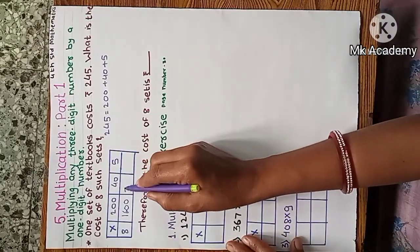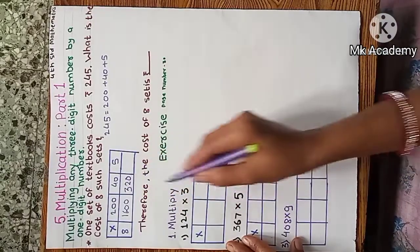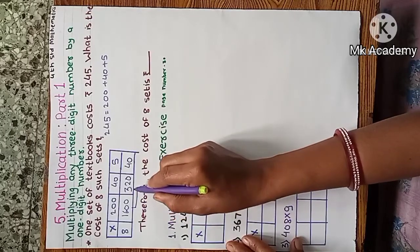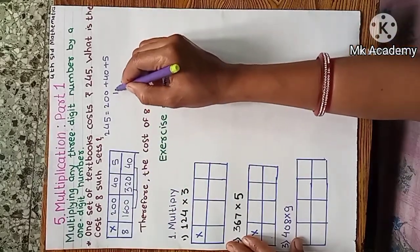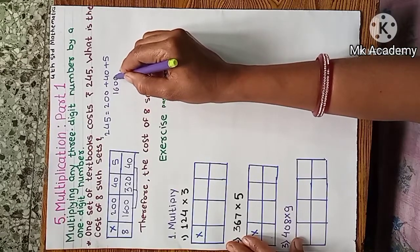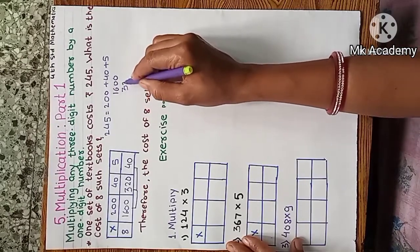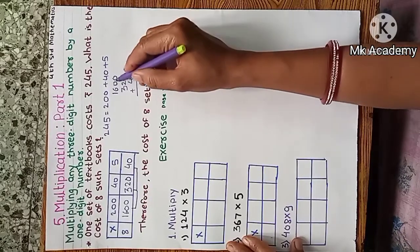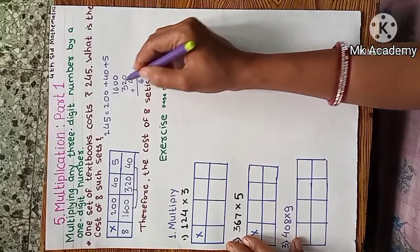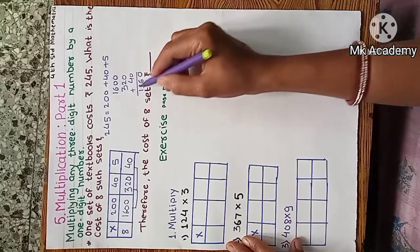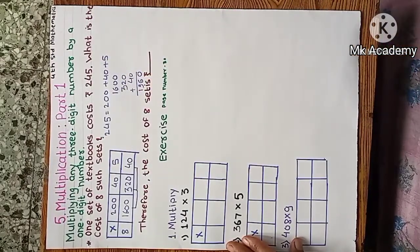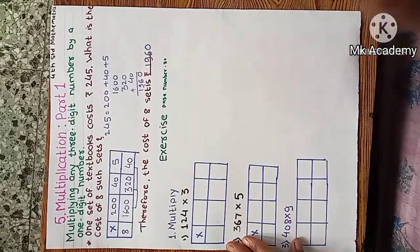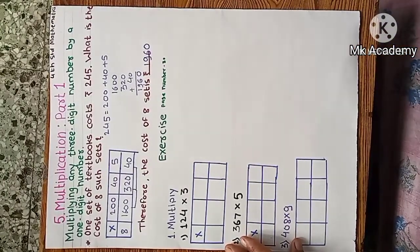8 fours are 32, means 320. 8 fours are 40. We have to do addition of all these: 1600 plus 320 plus 40. 0 plus 0 plus 0 is 0, 0 plus 2 plus 4 is 6, 6 plus 3 is 9, and 1. So the cost of 8 such textbook sets is rupees 1960.